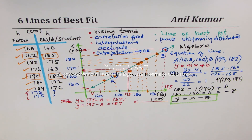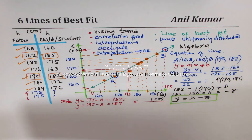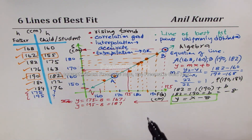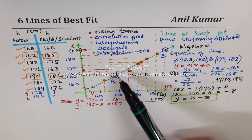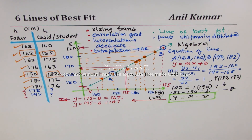With this example, I hope you understand how, using the data we started with, we could draw a line of best fit, find its equation, and then interpolate or extrapolate to get more information from the graph as well as from the equation itself. I hope that brings things to a close. Feel free to post your questions and doubts. Please share this video with your friends. Thank you and all the best.